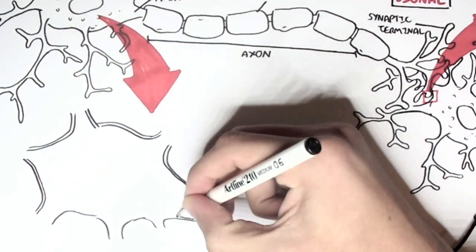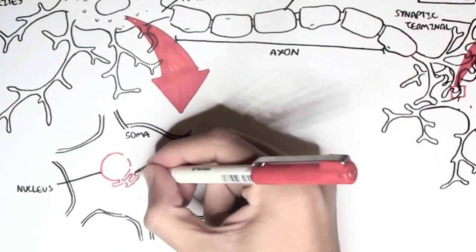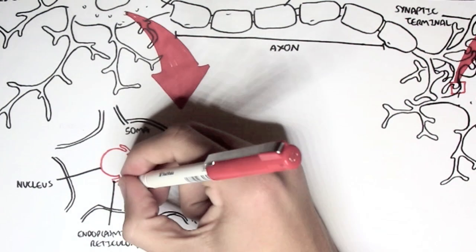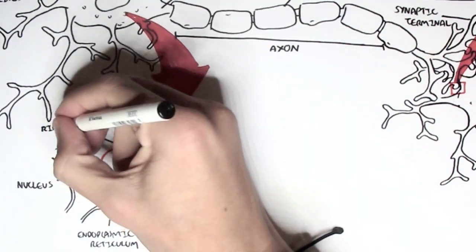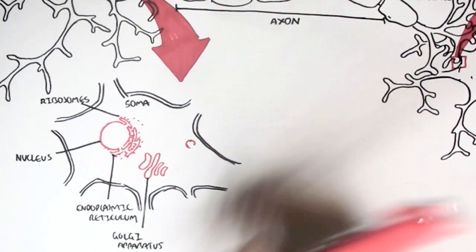So here we have a close-up of the soma of a neuron. We have the nucleus containing the genetic material, the rough endoplasmic reticulum around it with bound ribosomes and free ribosomes for protein synthesis. We have the Golgi apparatus for packaging and we have the lysosome.